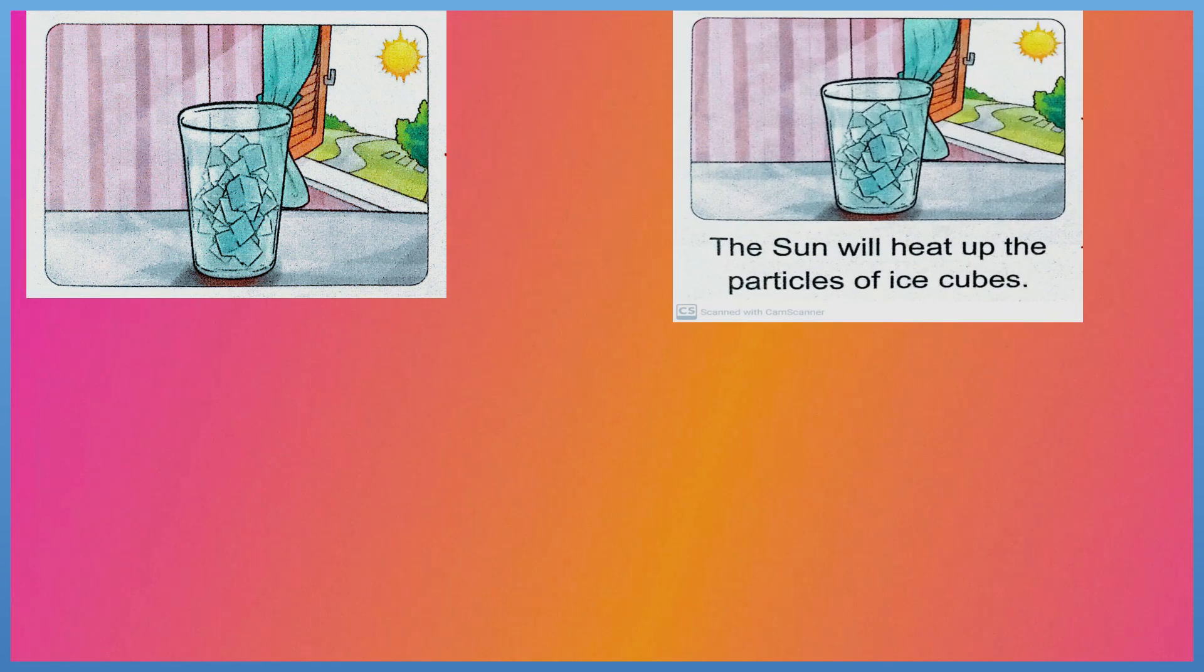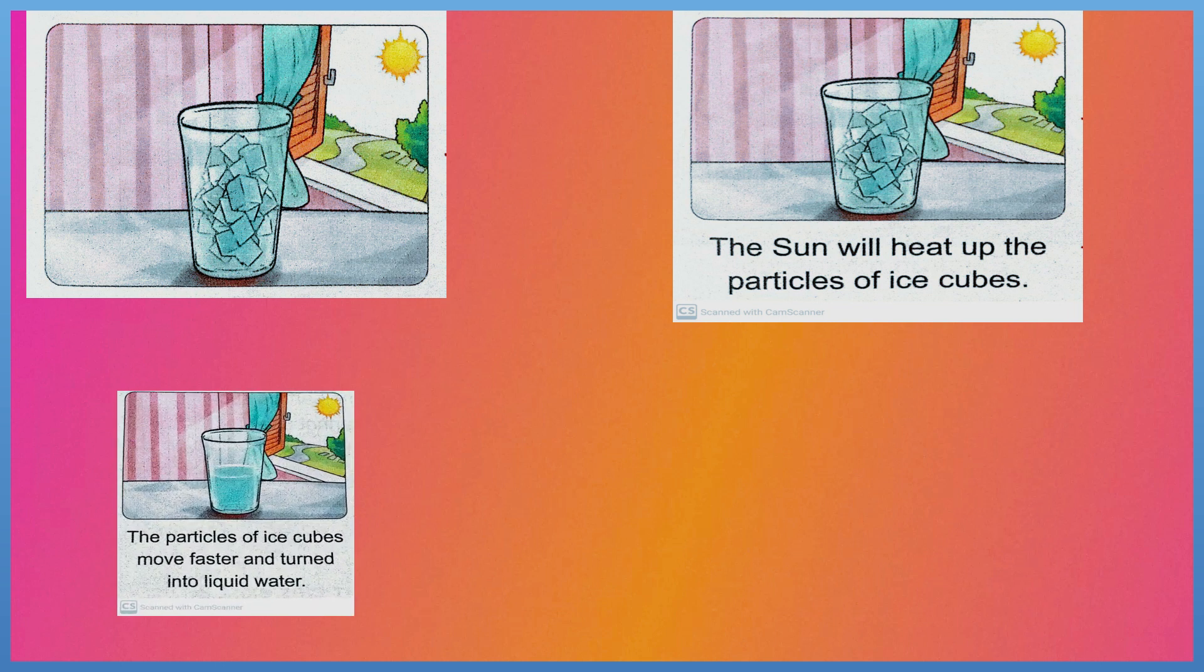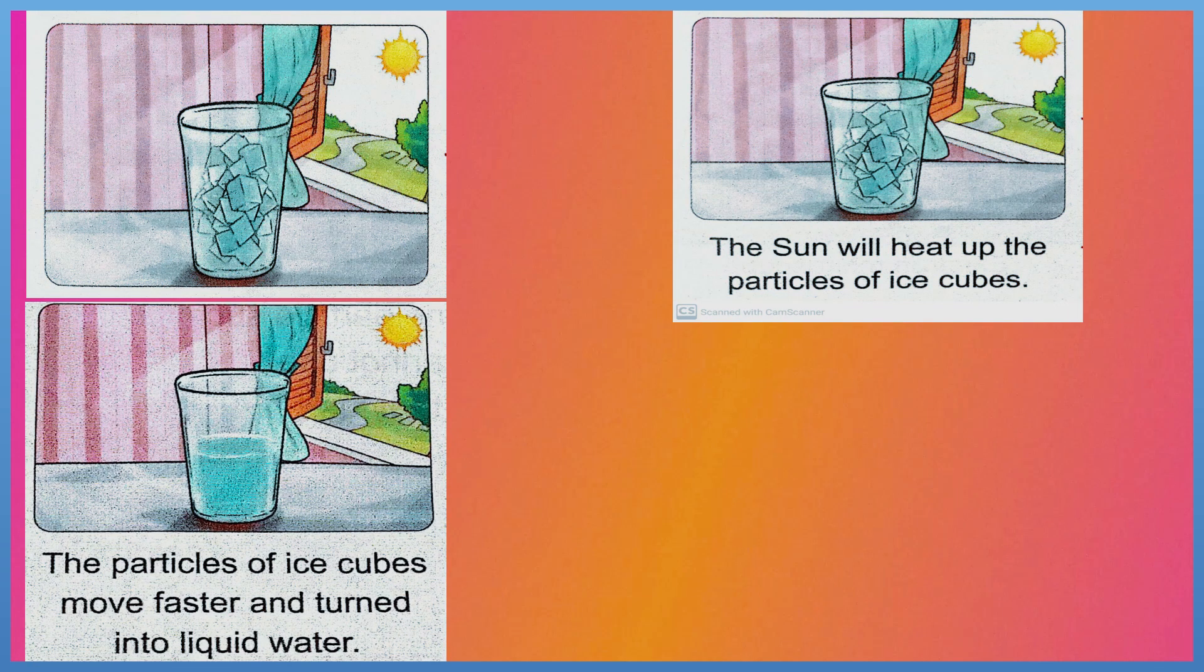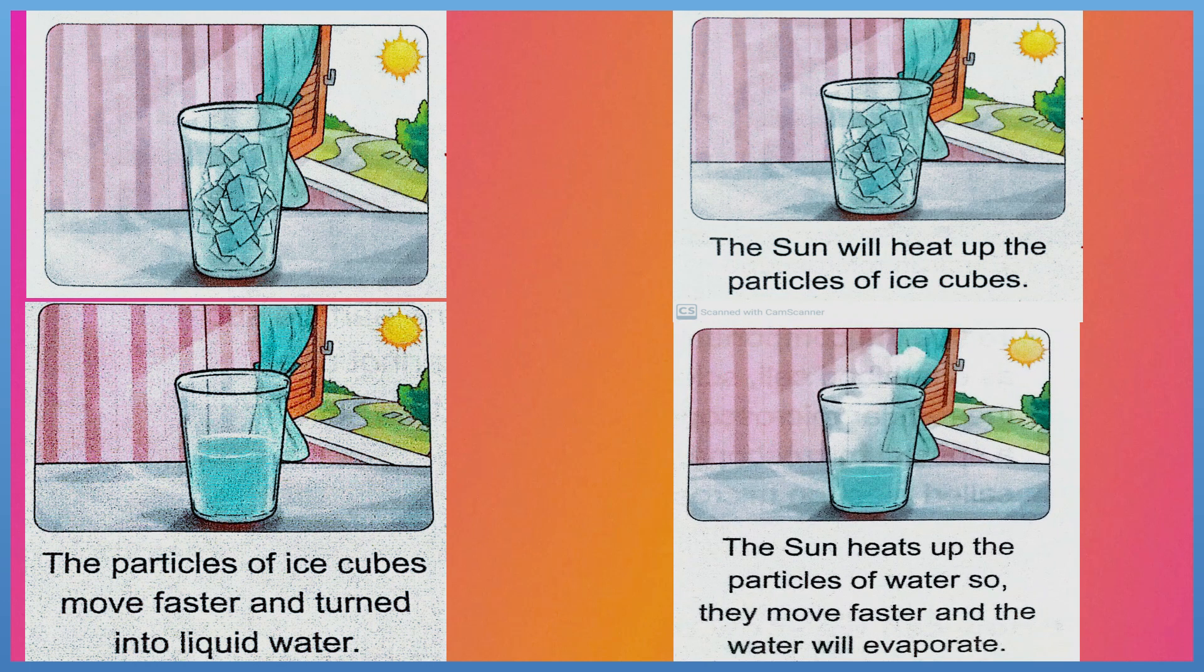When a cup of ice cubes is exposed to the sun on a hot summer day, the sun will heat up the particles of ice cubes. The particles of ice cubes move faster and turn into liquid water. The sun heats up the particles of water so they move faster and the water will evaporate.